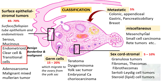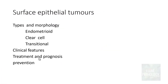Remember, all surface epithelial tumors are further classified as benign, borderline, and malignant. We will look at the types and morphology of endometrioid, clear cell, and transitional cell tumors, and then discuss the clinical features of surface epithelial tumors as a whole, including treatment, prognosis, and a note on prevention.